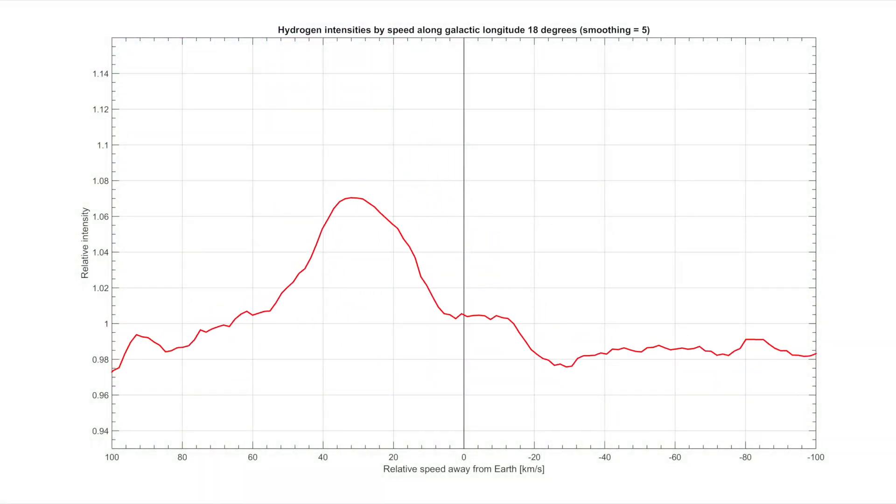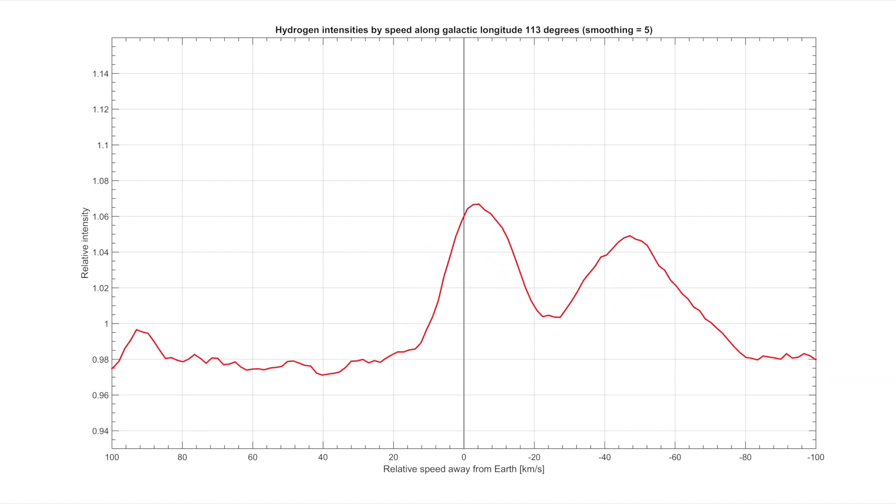If we can predict how fast different parts of the galaxy are moving, then we can work out where the gas must be concentrated along our line of sight to make the particular blend of radio waves which we observe. A lot of gas all moving at one speed, for instance, indicates a denser region of orbiting gas, possibly as part of a spiral arm.